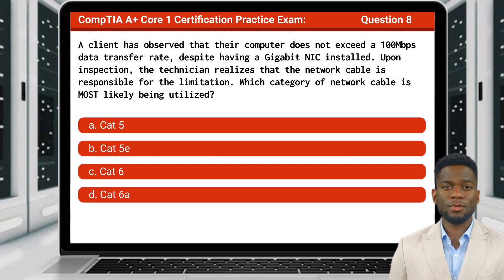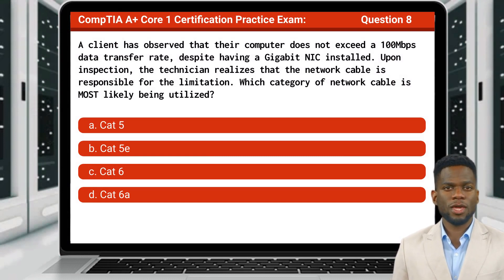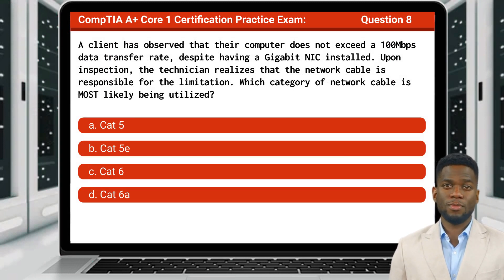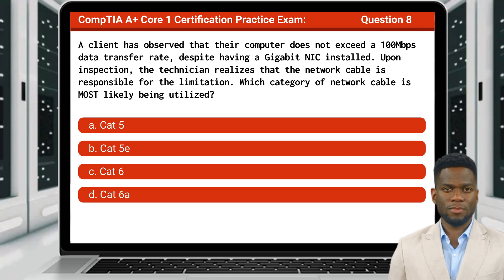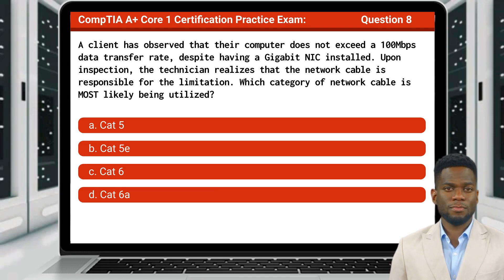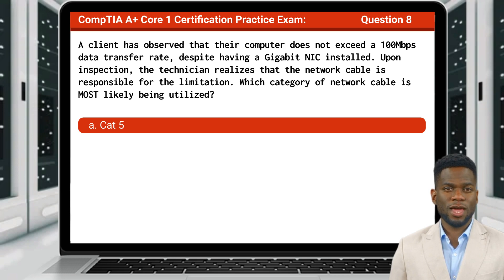Question 8. A client has observed that their computer does not exceed a 100 megabits per second data transfer rate despite having a gigabit NIC installed. Upon inspection, the technician realizes that the network cable is responsible for the limitation. Which category of network cable is most likely being utilized? The answer is A, CAT5.